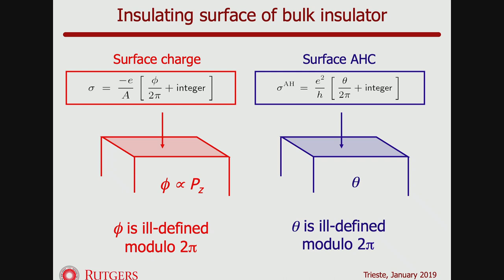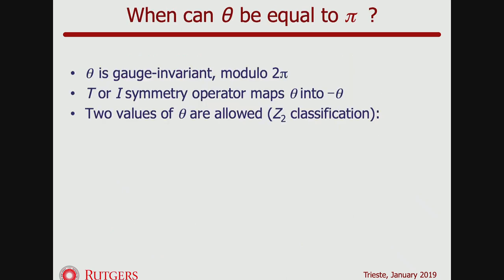Here's the analogy between the Berry phase and electric polarization on one hand, and the theta coupling in three dimensions on the other. For a 1D insulator, the surface charge σ is given by the Berry phase plus an integer. Analogously, the surface anomalous Hall conductivity for an insulating surface is given by the bulk contribution θ plus a possible integer. Mathematically speaking, you skip dimensions — there's another phase angle in five dimensions and in seven dimensions, though those are not currently useful.